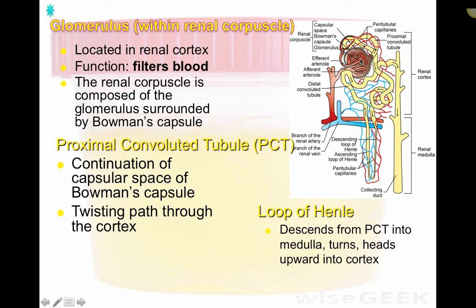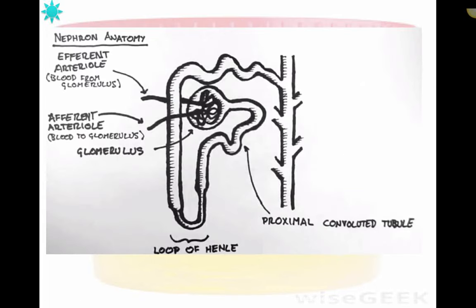The glomerulus sends urine substrate through the proximal convoluted tubule, which twists and turns, working its way into the loop of Henle — the most distal aspect of the nephron. The loop of Henle descends from the proximal tubule into the medulla, and on its way back up it becomes the ascending portion, eventually turning into the distal convoluted tubule back in the cortex.